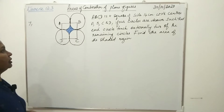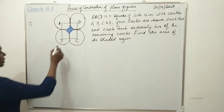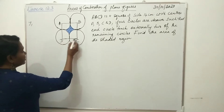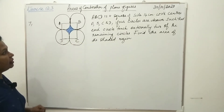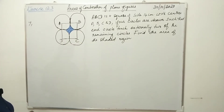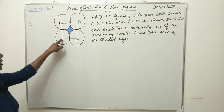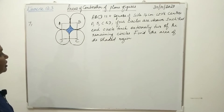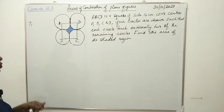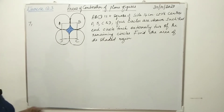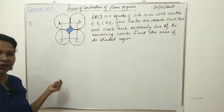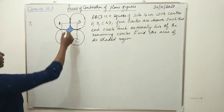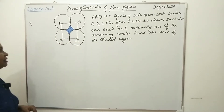The next question has options A, B, C, and D. Four circles are drawn such that each circle touches externally two of the remaining circles. Find the area of the shaded region — the blue colored area. That is the shaded region.